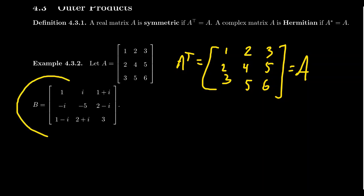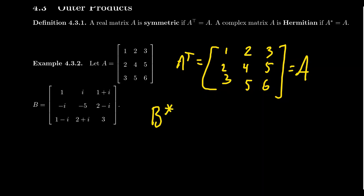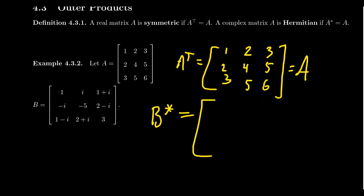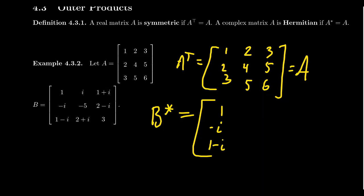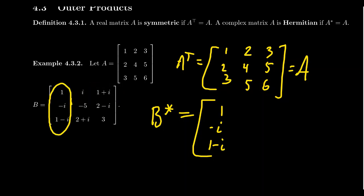Let me give you an example of a Hermitian matrix. For a Hermitian matrix, if I want to compute B* for this 3 by 3 complex matrix, the same basic idea applies: you take rows and turn them into columns, but you also take the complex conjugate. The conjugate of 1 is 1, the conjugate of i is negative i, and the conjugate of 1 + i is 1 − i. Taking the conjugate of the first row turned into a column, you'll notice that is identical to the first column of B.